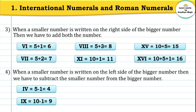Another example of Rule 4: IX — X means 10, I means 1. Since the smaller number I is on the left side of the bigger number X, we subtract: 10 minus 1 equals 9. So number 9 is written as IX in Roman numerals.